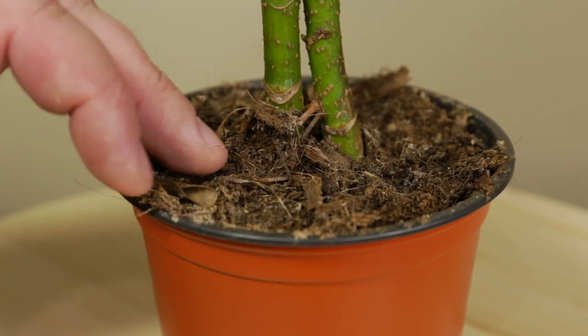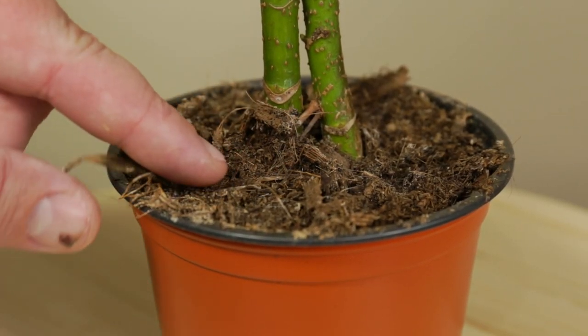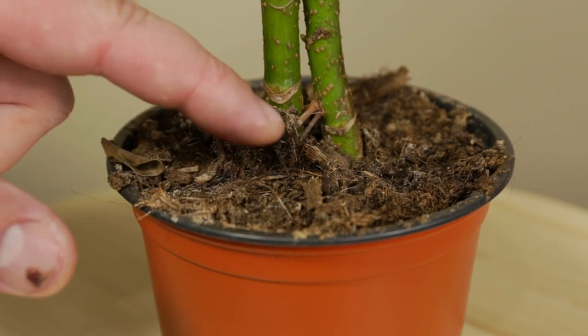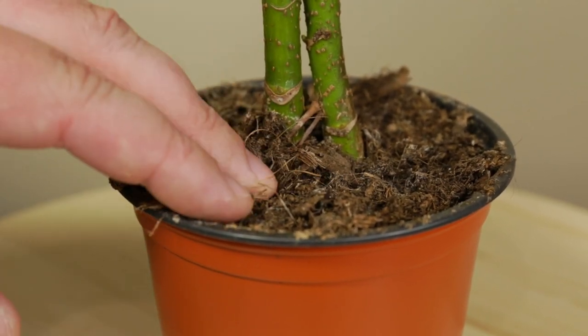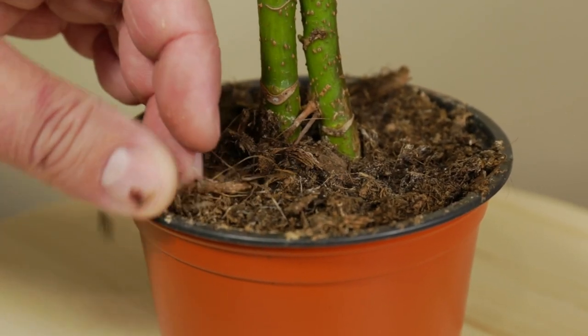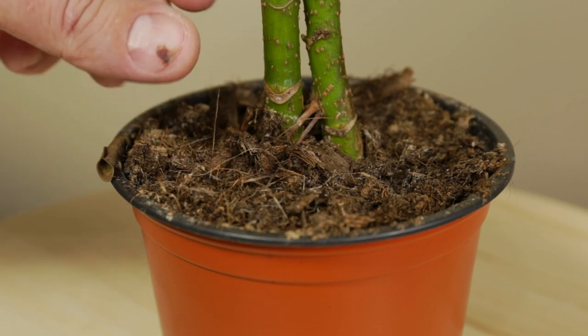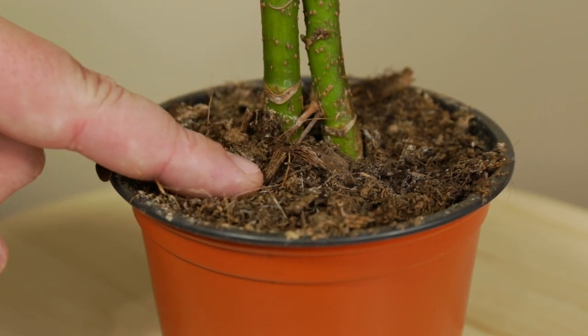The first order of business is to take the Schefflera plants out of this pot. They've been growing in this spongy soil largely based on coconut coir, which is not appropriate for most houseplants and especially not suitable for bonsai. So I will remove this soil completely.